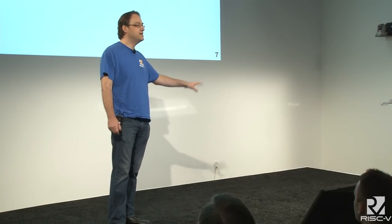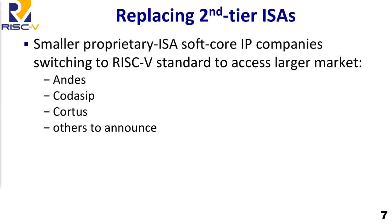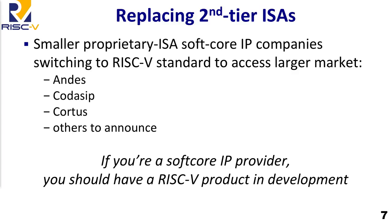RISC-V is basically replacing the second-tier ISAs. Smaller proprietary ISA providers and soft-core IP providers are seeing that the big market will be there for RISC-V, so they're switching from proprietary ISAs to supporting RISC-V. Andes and Cadence are examples, and others will be announcing in this category. The message is clear: if you are a soft-core IP provider, you should have a RISC-V product in development — no qualification at all.